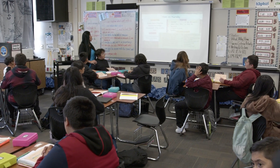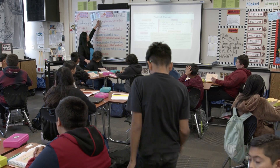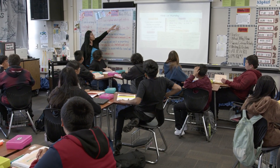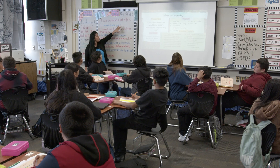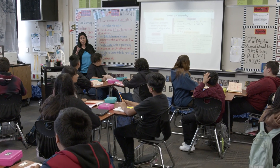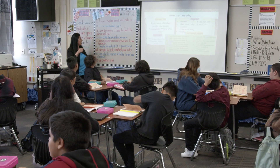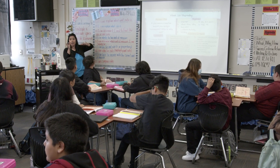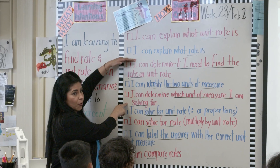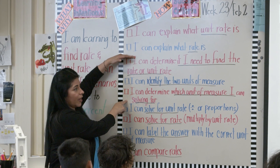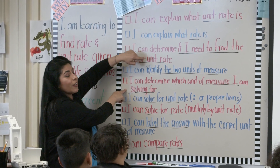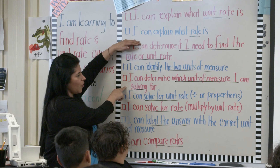Our first activity is going to be based on these two success criteria. So what words are you going to be talking about? Rate. Our second, level three, that activity is going to be based on three of these success criteria right here. And what two terms are you going to talk about? Rate and unit rate.